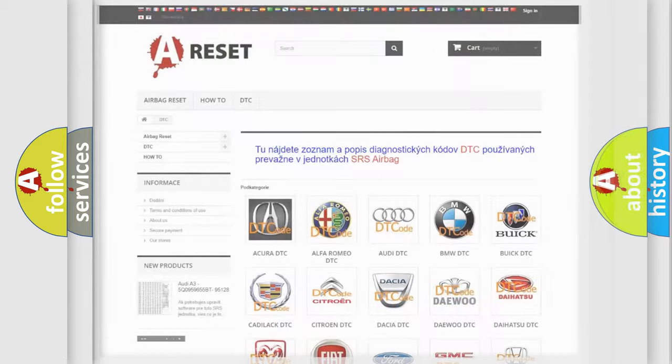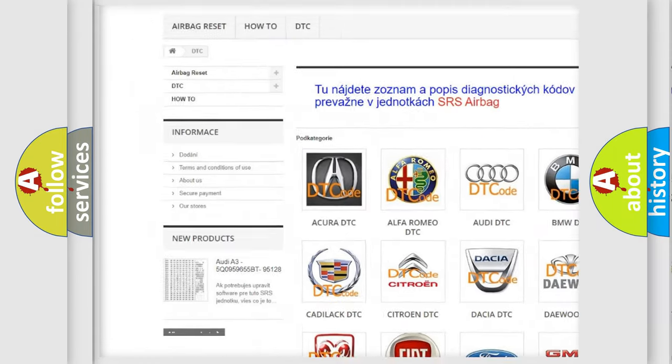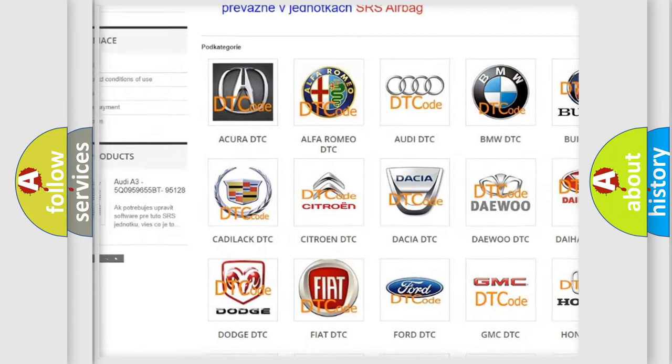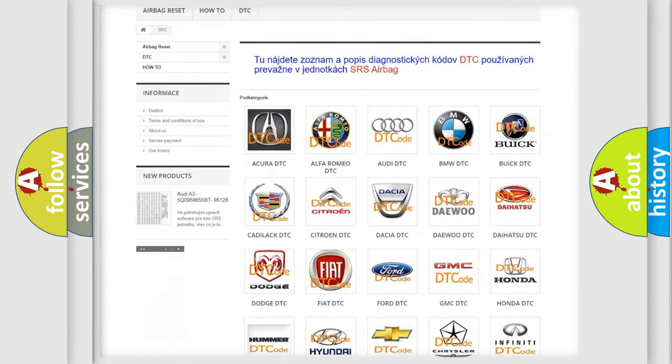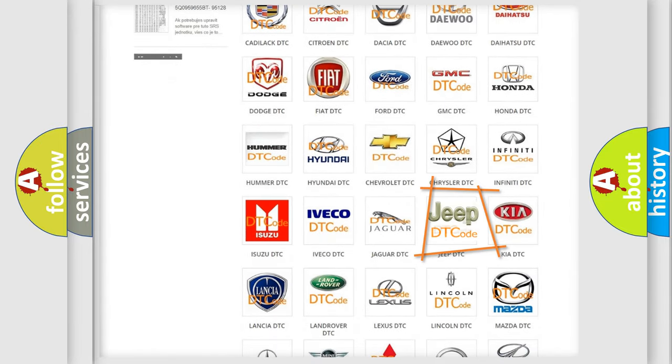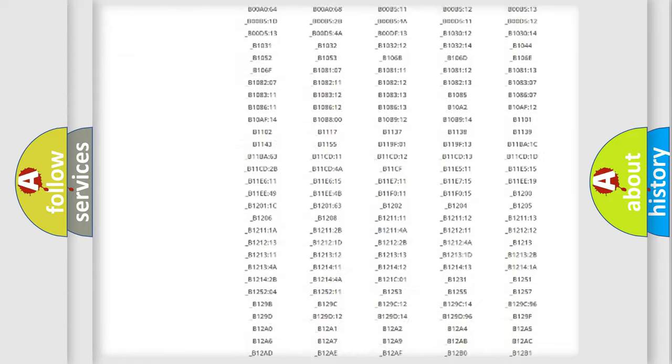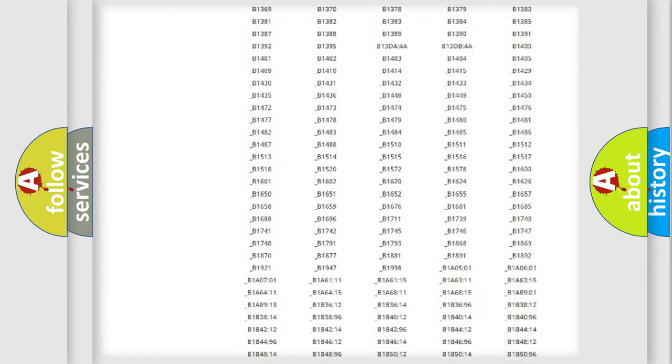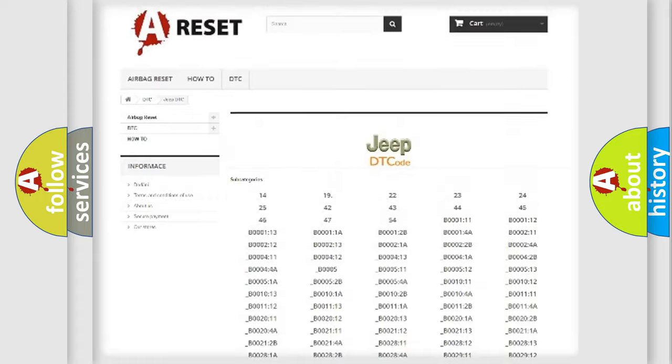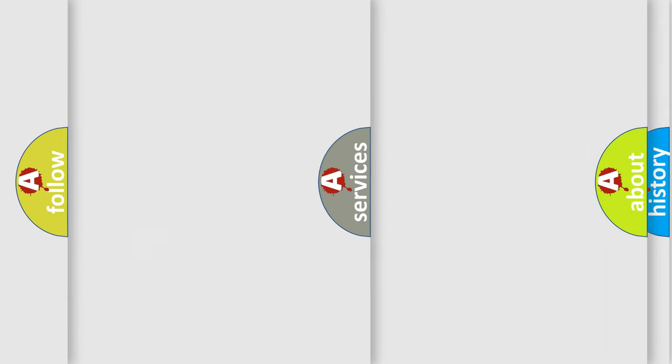Our website airbagreset.sk produces useful videos for you. You do not have to go through the OBD2 protocol anymore to know how to troubleshoot any car breakdown. You will find all the diagnostic codes that can be diagnosed in Jeep vehicles, and many other useful things.